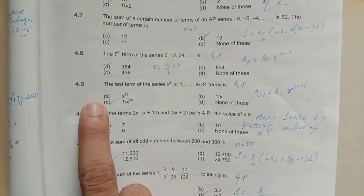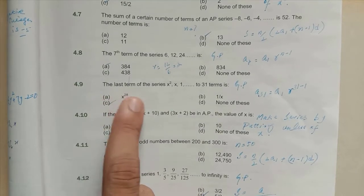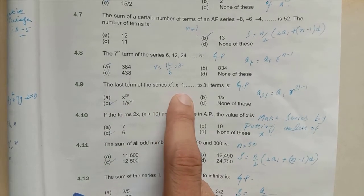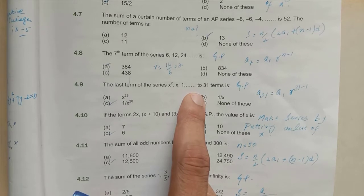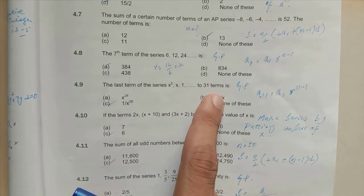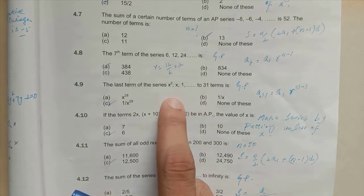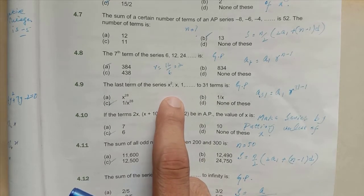Question number 9 says that the last term of the series x², x, 1, up to 31 terms is... So what do we need to know? The 31st term.